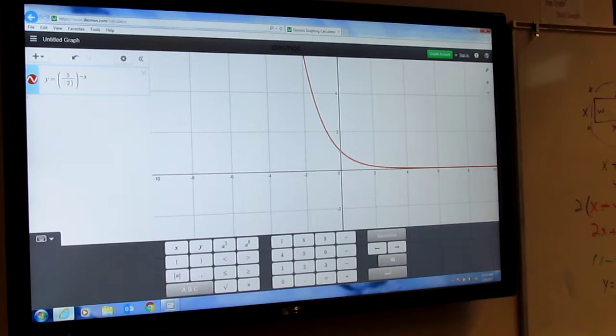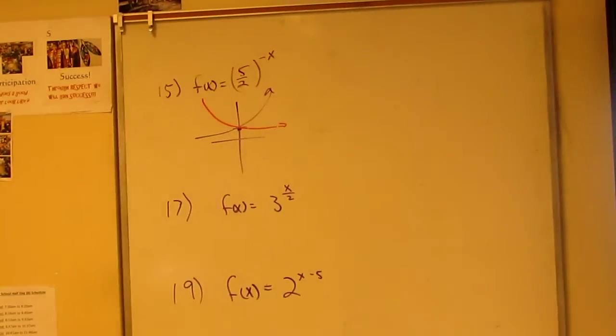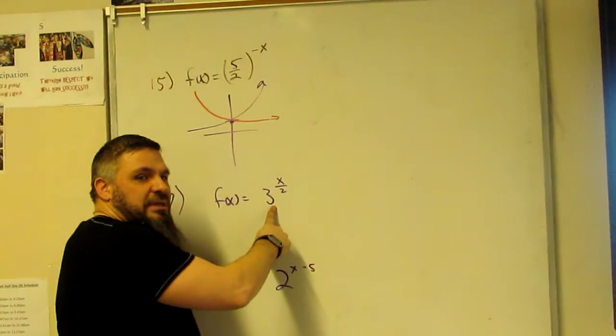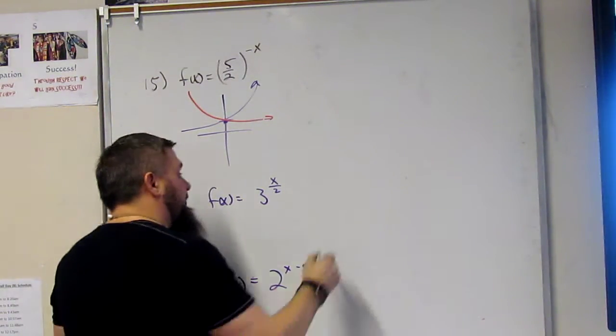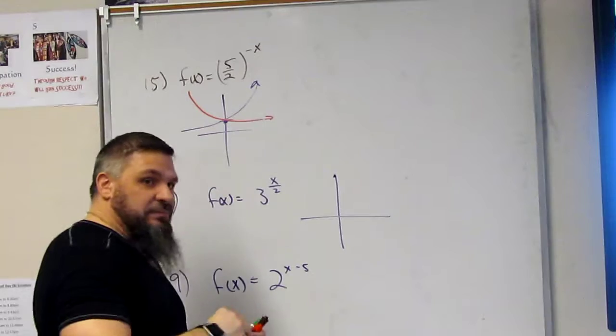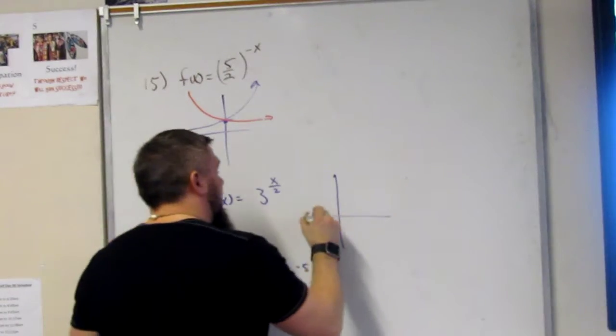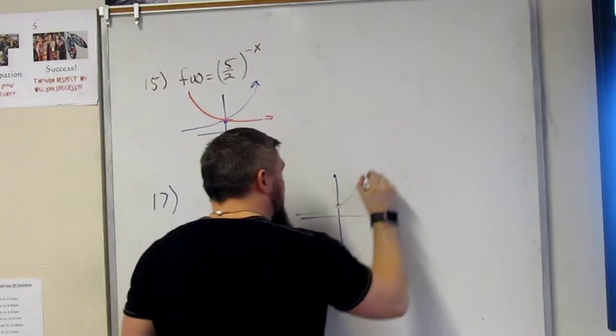So the next one is 17. And 17 is 3 to the x over 2. And we have to remember, is this a growth or decay? I say growth. Growth. So we have this function that looks like this, and then it is growth. Growth, so it's going from 0 again, going through 1. It goes from 0 to infinity.